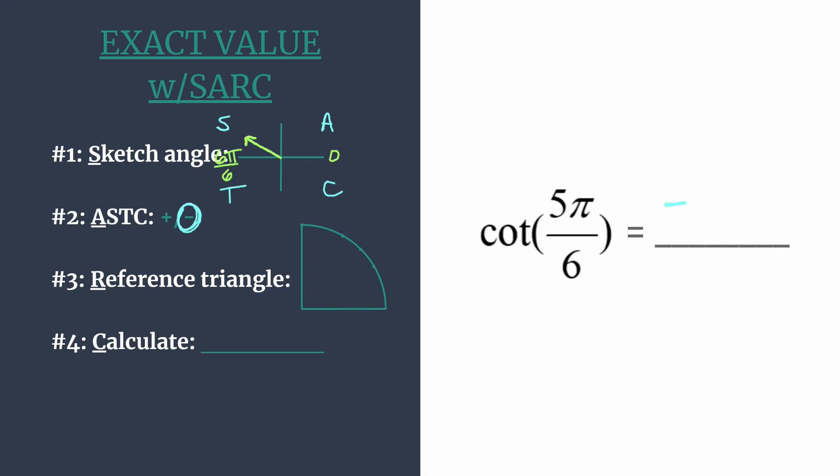Alright, now we're ready for step 3. Let's find our reference angle so we know which triangle and coordinates we're working with here. So the reference angle is the amount of rotation from the terminal side of an angle to the x-axis. So between 5π over 6 and 6π over 6, we must have π over 6 rotation.